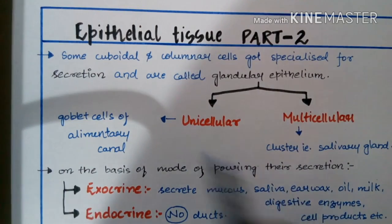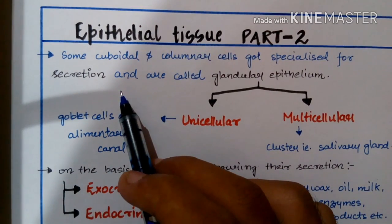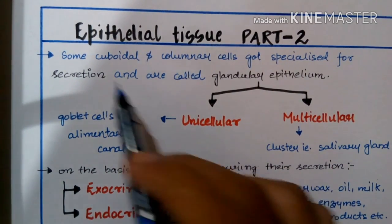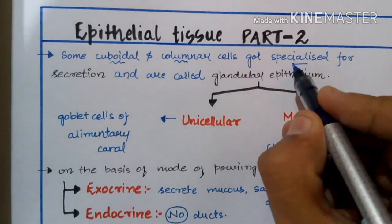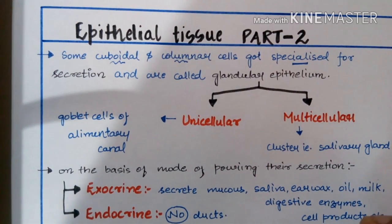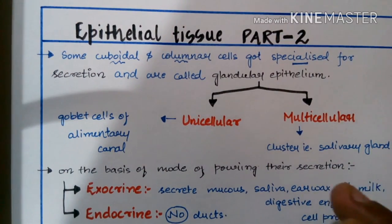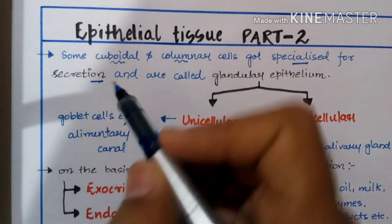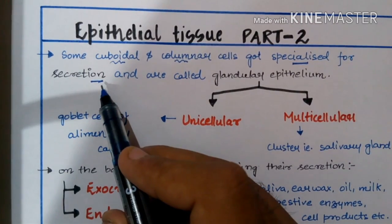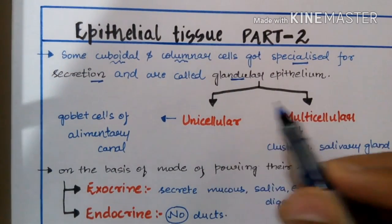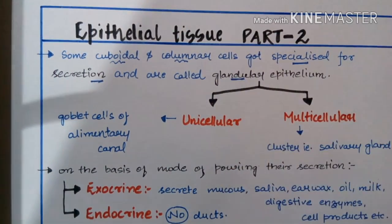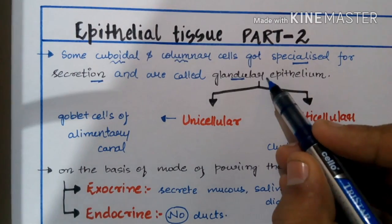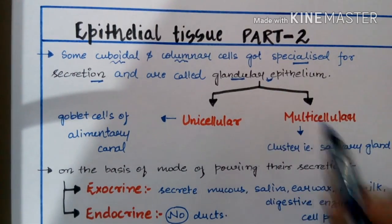This is epithelial tissue part 2. We have discussed different kinds of epithelial tissue — simple and compound. Cuboidal and columnar cells got specialized for particular purposes. They have two main functions: secretion and absorption, as discussed in the previous video. For secretion, they are modified into different kinds of glands. These glands may be of different types — unicellular and multicellular.